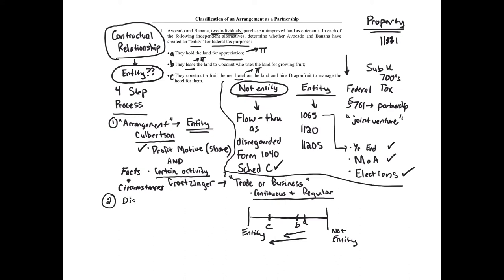If it is an entity, we continue to Step 2: distinguish trusts. Do we have a trust-type activity — some type of arrangement where property is held for someone attaining a certain age, for example? This is not a trust. We're distinguishing trusts from other entities because a trust is technically considered an entity for tax law purposes and files Form 1041. Since this is not a trust, we are a business entity — so we move to Step 3.